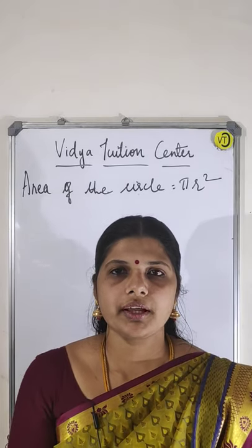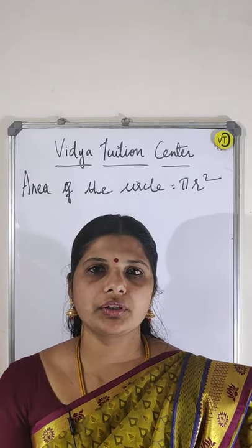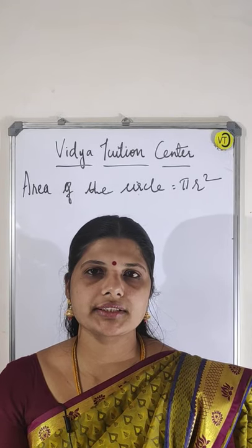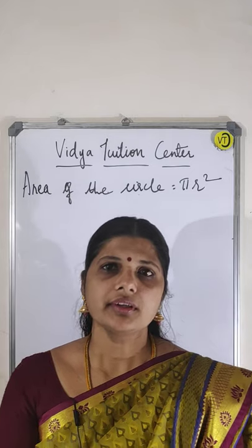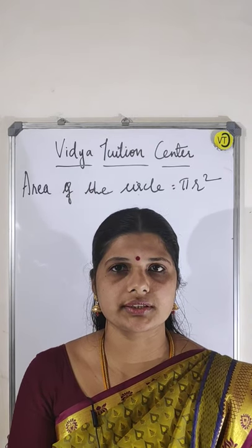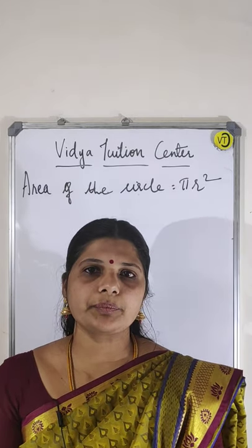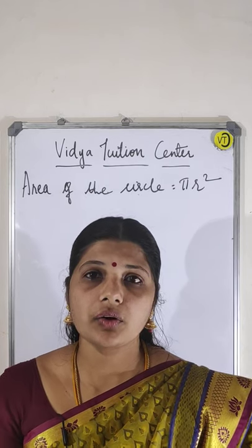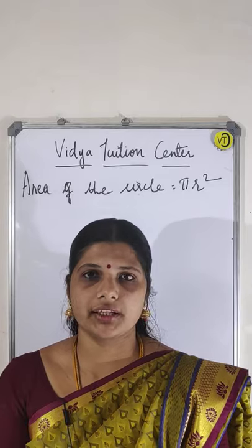Hello children. Today I am going to explain you about the formula: area of the circle is equal to pi r square. This formula you have already learnt in the lower classes. So what is the area of the circle? That is pi r square. How does the formula come? That I am going to tell you.